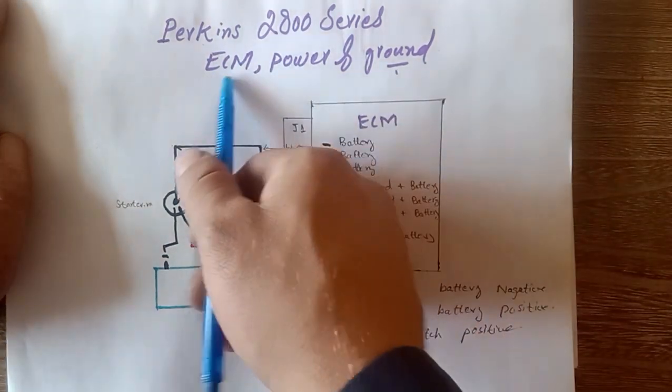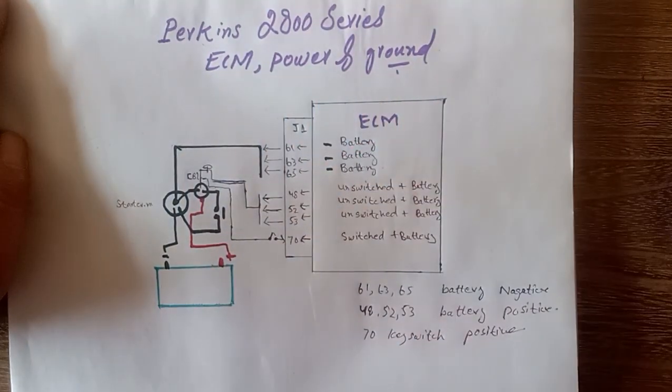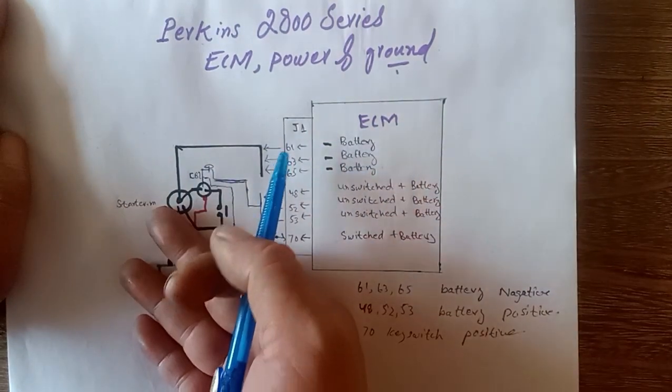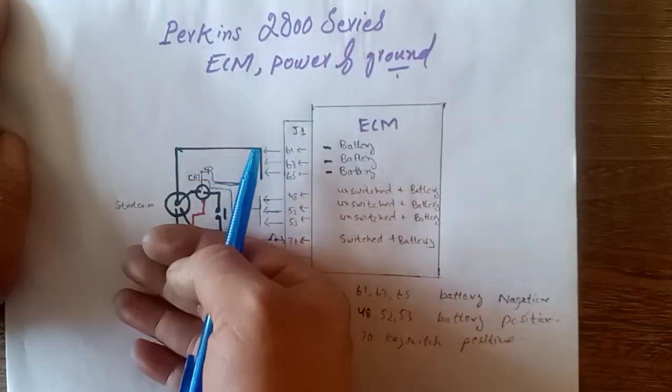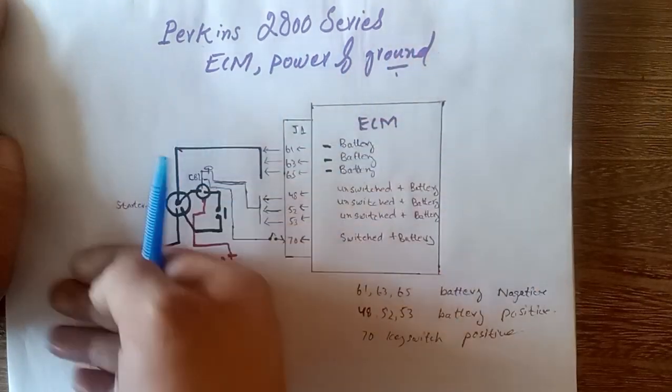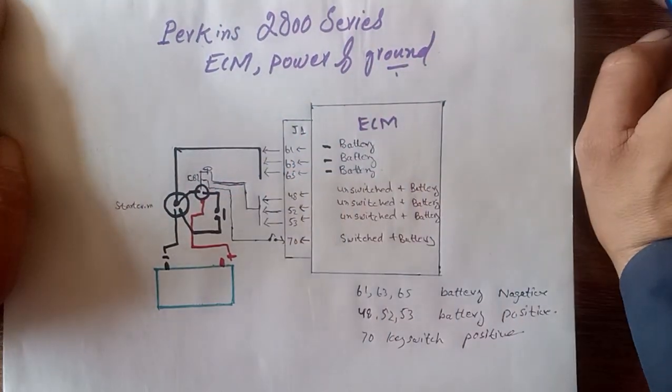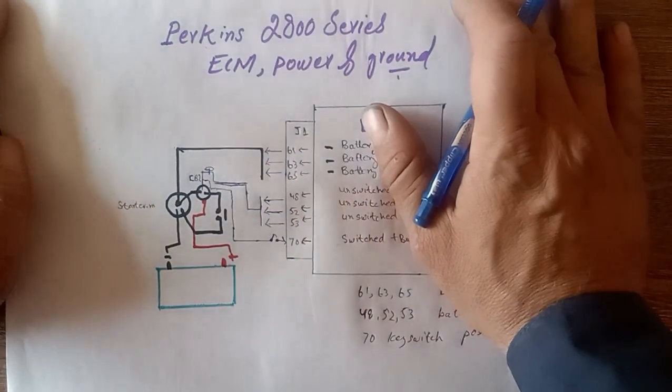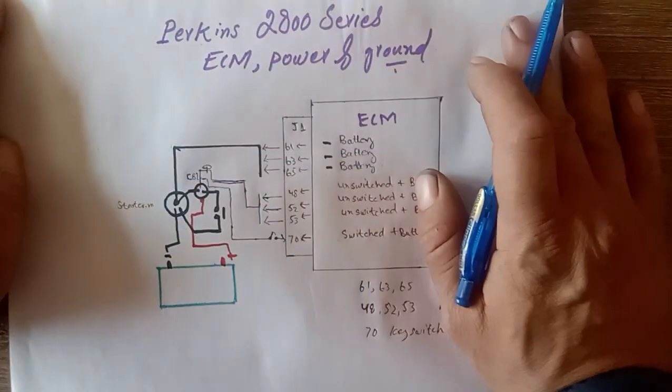Today we are talking about the Perkins 2800 series ECM powering and ground. If you're working and troubleshooting the Perkins 2800 series engine that cranks but does not start, you need to check the ECM power and ground.